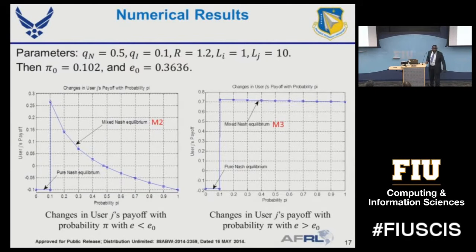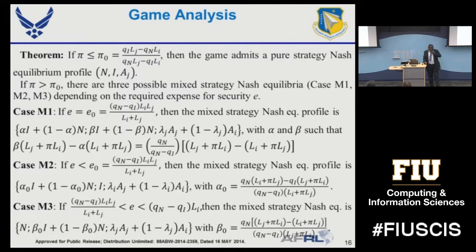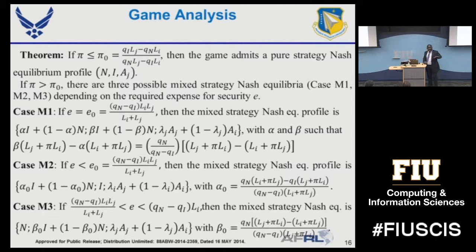Clarification on notation: N means not invest. Beta_0 is the probability by which a player chooses to invest — playing a mixed strategy means randomizing among available strategies, and beta_0 gives that distribution. Similarly, lambda_i and lambda_j — with one minus lambda — give the distribution by which the attacker will go after each user.